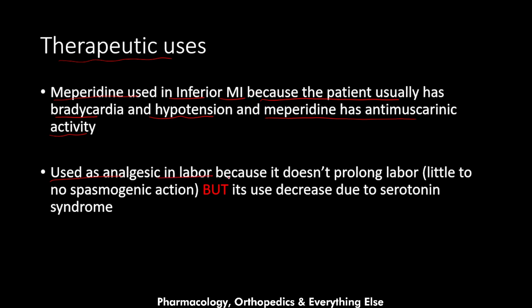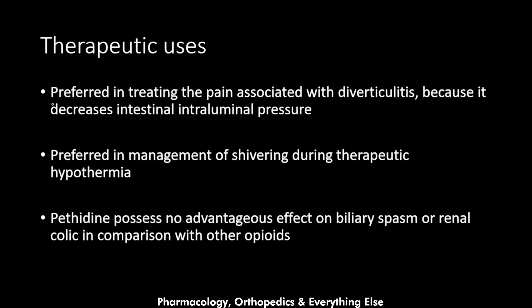Meperidine is also used as an analgesic in labor because it doesn't prolong labor like morphine does, having little to no spasmogenic action — though its use has decreased due to serotonin syndrome risk. It is preferred in treating pain associated with diverticulitis because it decreases intestinal intraluminal pressure. It is also preferred in managing shivering during therapeutic hypothermia. However, pethidine shows no advantageous effect on biliary spasm or renal colic compared to other opioids, despite its anti-muscarinic effects.